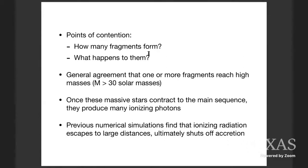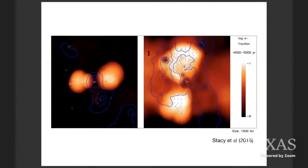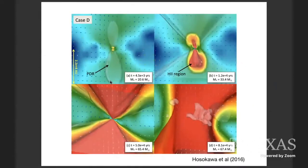So this is kind of the consensus picture. This is just an example from a paper from a few years ago by Stacey et al., where you can see the growth of these regions of ionized hydrogen as a function of time. There's another study from a few years ago by Takeshi Hosokara showing, first of all, the outbreak of a photodissociation region in the polar regions of the disk. And then this is followed later on, once the stars become more massive, by the outbreak of an H2 region, which ultimately photo-ionizes all of the gas and gets rid of the disk.